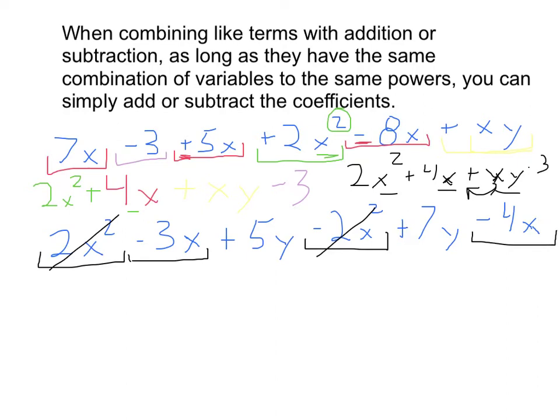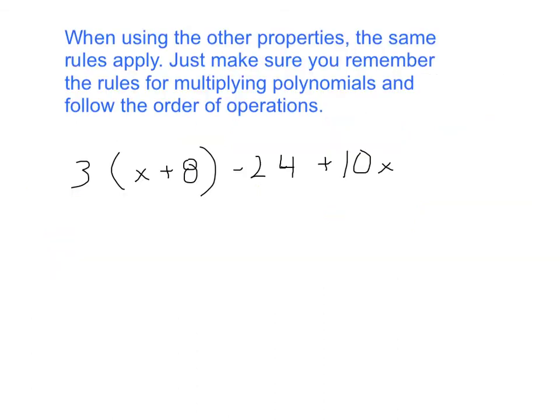Now we have a negative 3x and a negative 4x, so that's going to give us a negative 7x. And then we have a positive 5y and a positive 7y, that will give us a positive 12y. So that would be our final answer for that one.